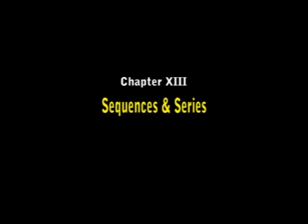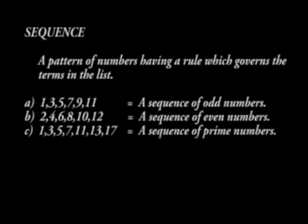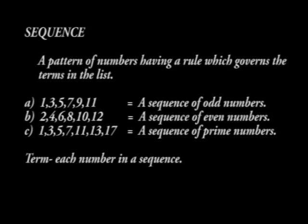Sequences and Series. A sequence is a pattern of numbers having a rule which governs the terms in the list. Consider the sequences A, B and C. A is a sequence of odd numbers. B is a sequence of even numbers. C is a sequence of prime numbers. Terms mean each number in the sequence. Each sequence has a rule that governs it. Such rule may be addition, subtraction, multiplication or division with another number.